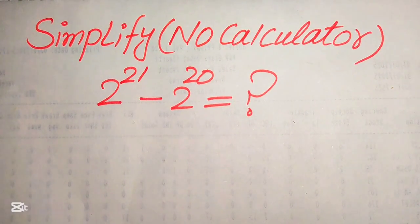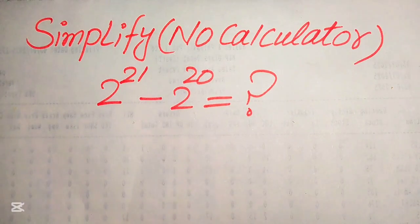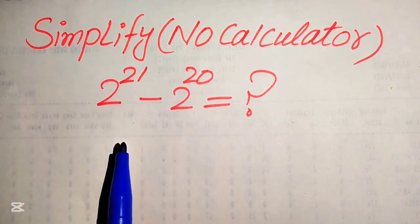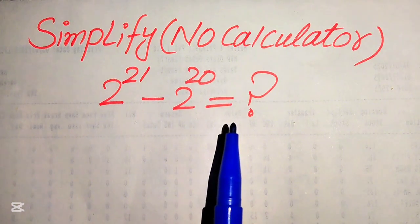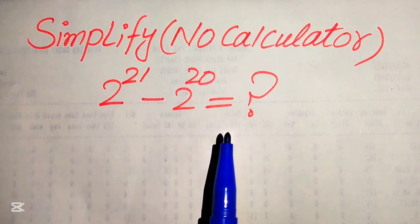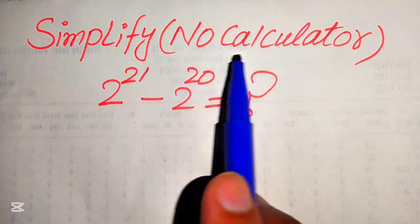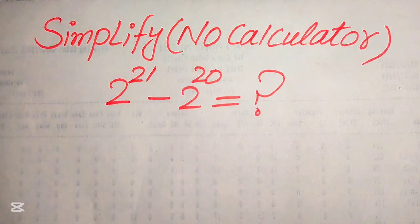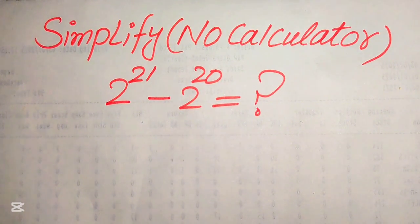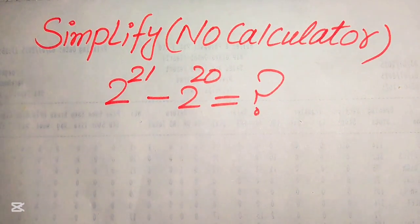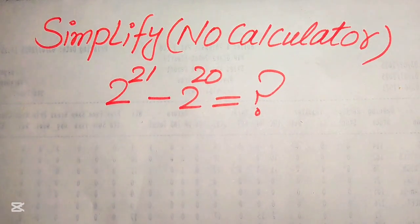Hello everyone, today I want to show you how to simplify this algebraic expression: 2 to the power of 21 minus 2 to the power of 20. We will write this algebraic expression in its lowest form. Remember, a calculator is not allowed in this problem, which means we will show all of the working on this paper. I hope you like this method, but if you have any other method in mind, please don't hesitate to write it in the comment section.